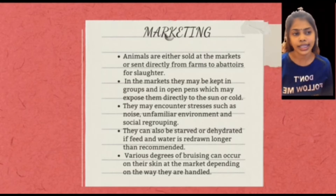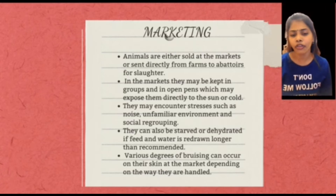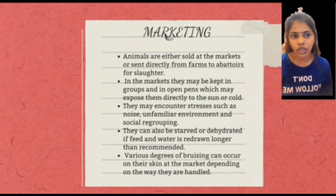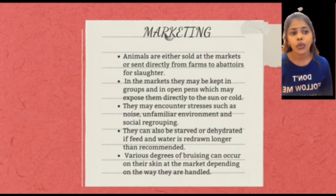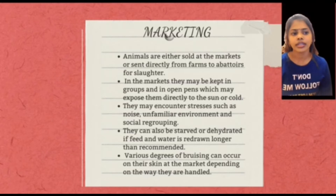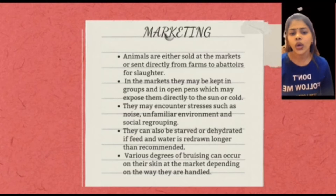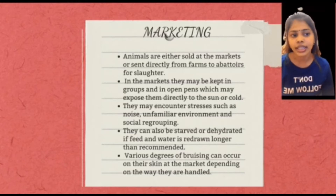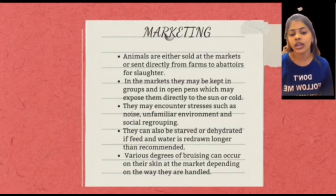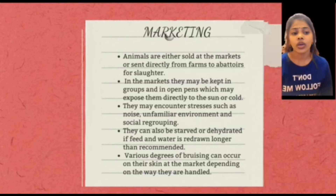The next factor affecting meat quality is marketing. Animals are either sold at market or sent directly from the farm to abattoirs for slaughter. In the market they may be kept in pens or open areas which may expose them directly to sun or cold. They might encounter stress such as noise, unfamiliar environments, and social regrouping. They can also be starved or dehydrated if feed and water are withdrawn longer than recommended, and various degrees of bruising can also occur on their skin.